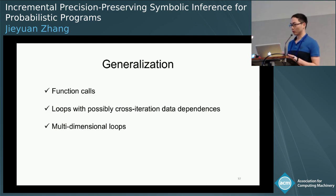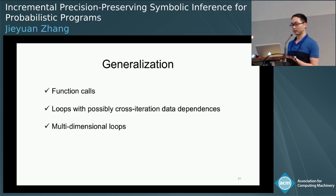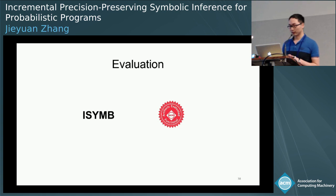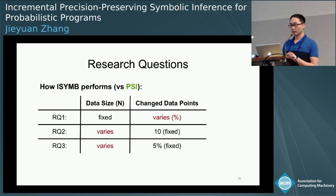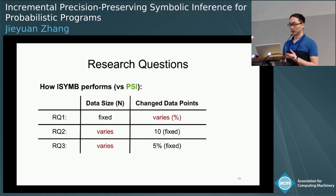So far we introduced incremental inference for probabilistic programs with a single main function and iteration-interchangeable conditioning loops. The approach can be extended to include function calls, loops with possibly cross-iteration data dependencies, and multi-dimensional loops, as discussed in the paper. Our tool is called RIS-1B, which is PSI-based.